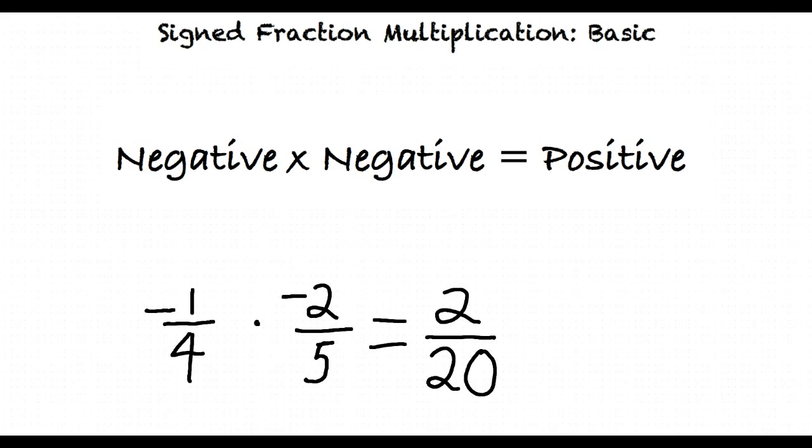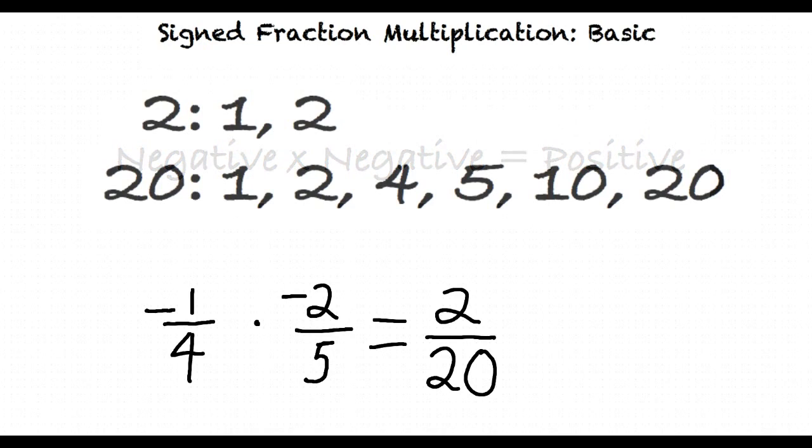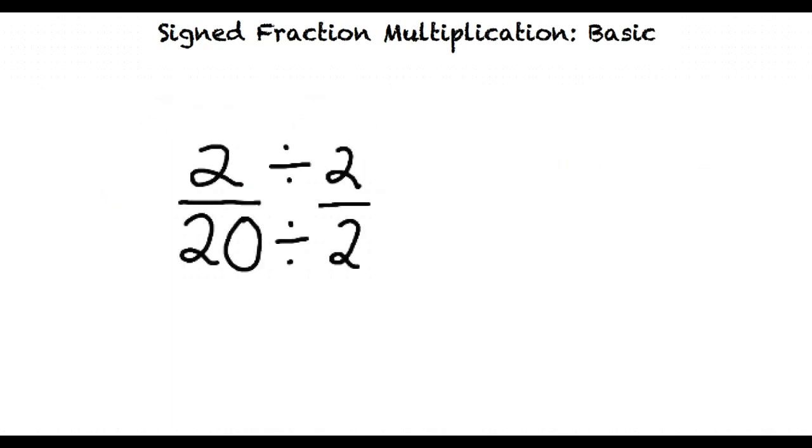In this last example, our answer of 2 20ths can be simplified because 2 and 20 share a common factor of 2. Since both of them can be divided by 2, we simplify by dividing both top and bottom by 2 to result in a final answer of 1 tenth.